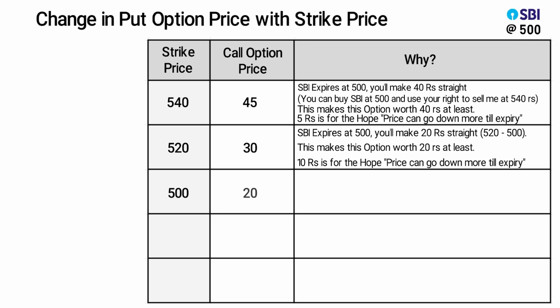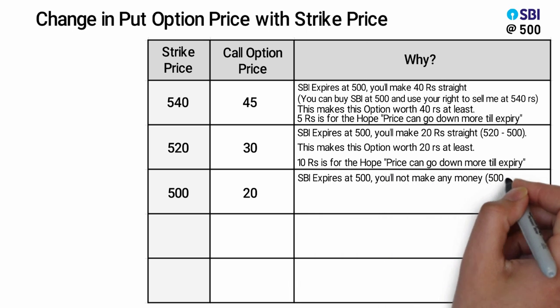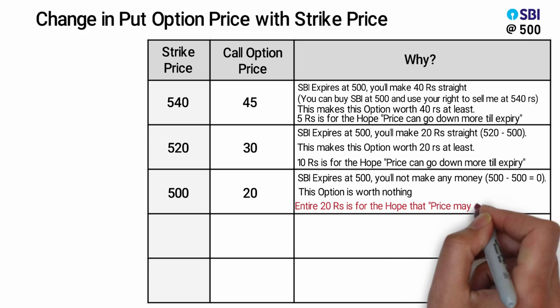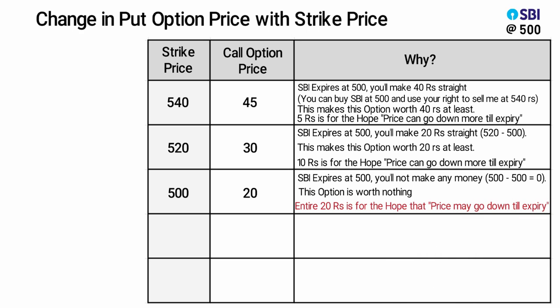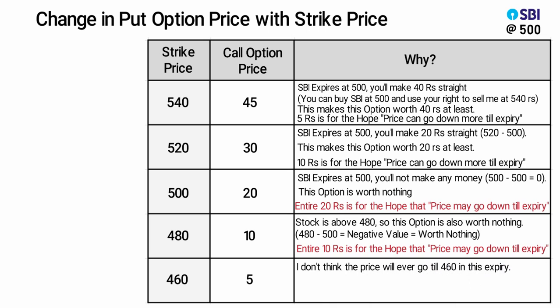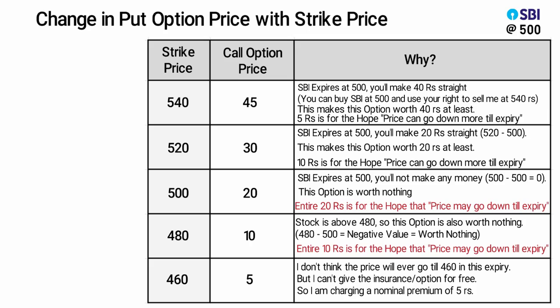For the 500 strike, I'm charging 20 rupees — pay close attention. The stock is at 500, so the entire 20 rupees is for the hope that SBI may go down till expiry. For the 460 strike price, I'll charge you 10 rupees. The stock price is above the strike, so the option is worth nothing straight away — the entire 10 rupees is for the hope that SBI may go down till expiry. As there are fewer chances the price will go this low, I'm charging less premium. For the 460 strike, I'm charging only 5 rupees, because I don't think the price will ever go to 460 in this expiry, but I can't give the option for free, so I'm charging a nominal premium of 5 rupees.